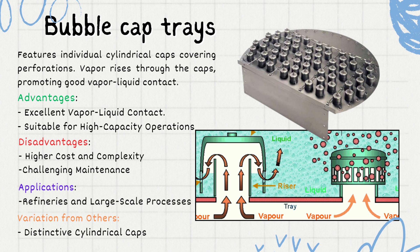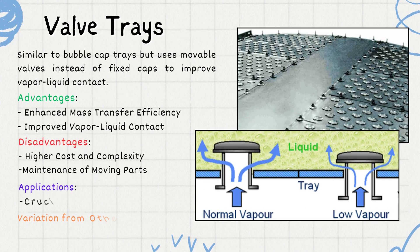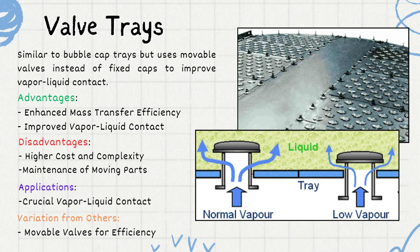Now looking at the last type of tray for this video: the valve tray. Valve trays are similar to bubble cap trays but feature movable valves designed to enhance vapor-liquid contact during distillation. The valve trays are more movable compared to bubble cap trays. The advantages of valve trays are: enhanced mass transfer efficiency — valve trays are known for their improved mass transfer efficiency, contributing to better separation performance. Improved vapor-liquid contact — valve trays provide superior vapor-liquid contact compared to other types, leading to more efficient separation.